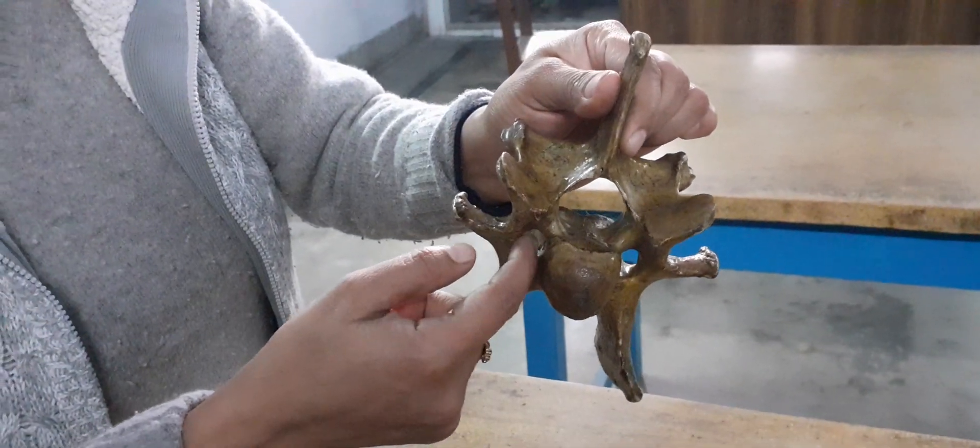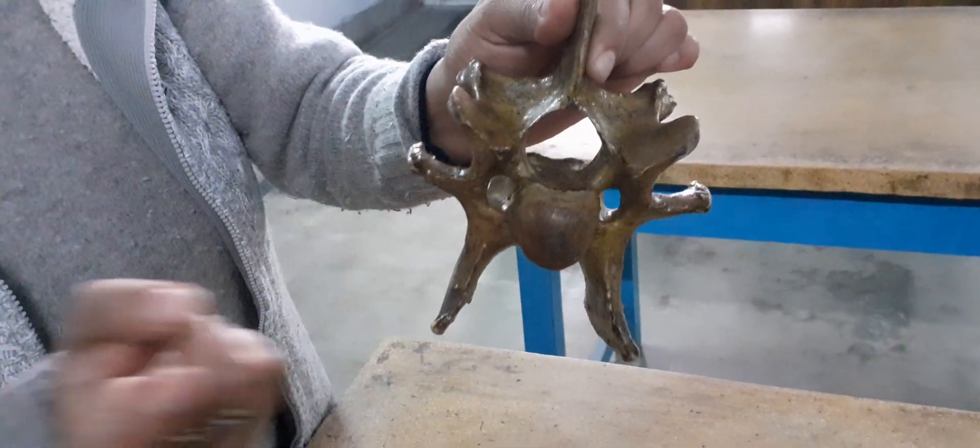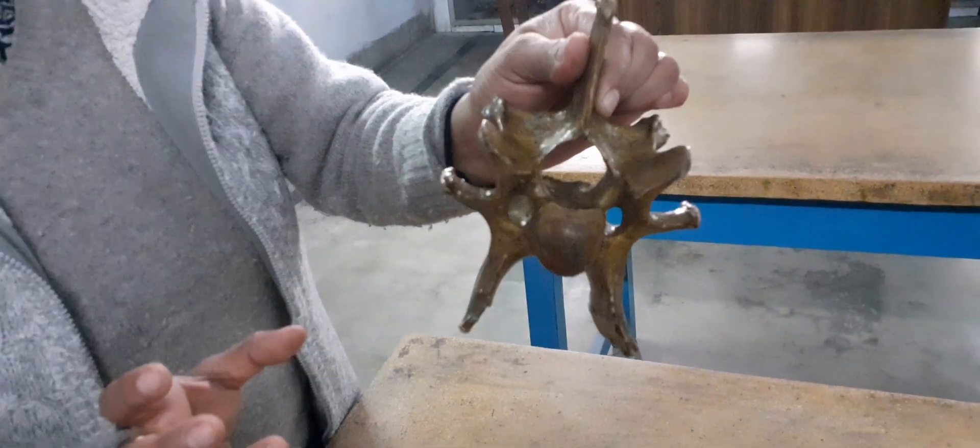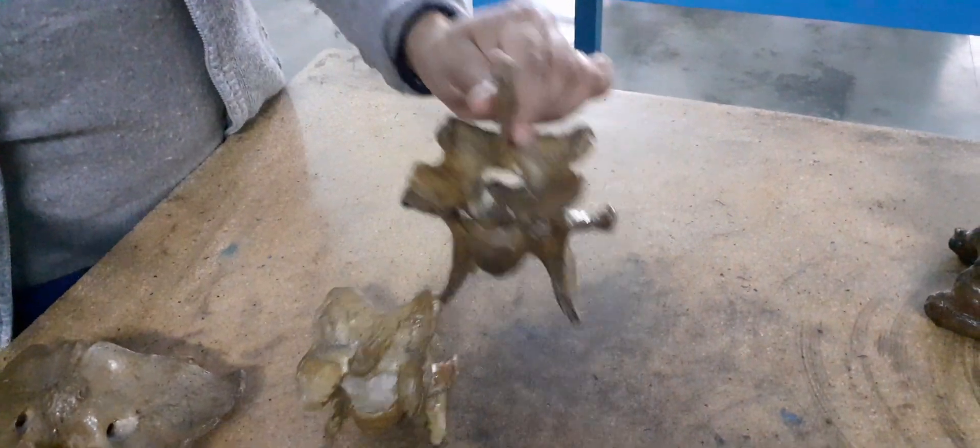Another peculiarity is this foramen transversarium. If you will see this foramen, it is a wider foramen compared to the typical vertebra. So this is about the 6th cervical vertebra.